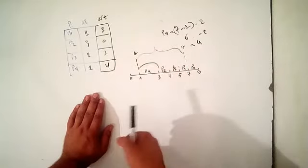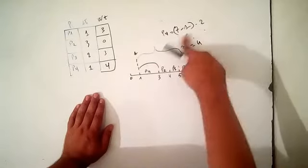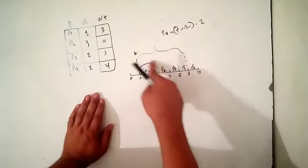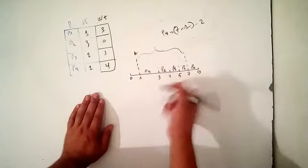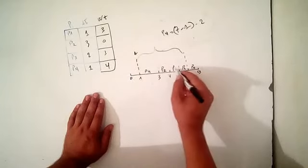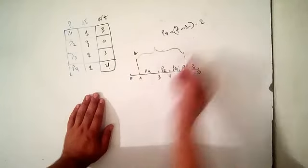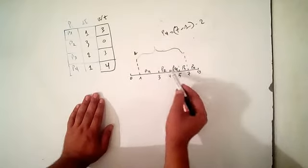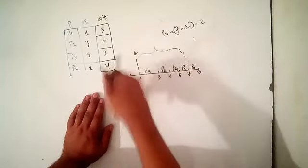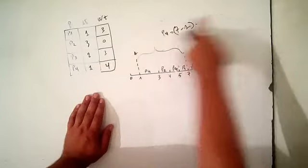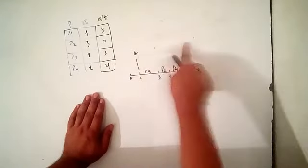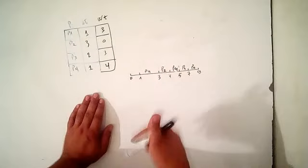To generalize: if P4 also executed at additional intervals within that range, you would subtract all those execution durations. For example, if P4 executed at two separate intervals, you would do 7 minus 1 minus 2 minus 1. That covers the waiting time calculation for all four processes.